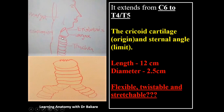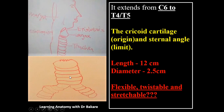The trachea extends from the cricoid cartilage, which is the cartilage that forms the inferior border of the larynx — essentially the terminal end of the larynx. It goes down to the level of T4–T5 thoracic vertebra, where it bifurcates into two. It is about 12 cm in length and about 2.5 cm in diameter.